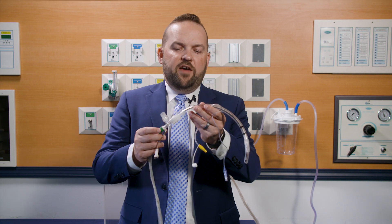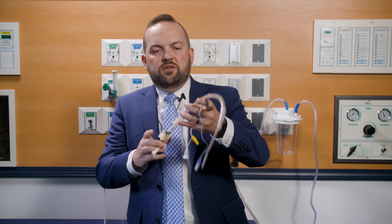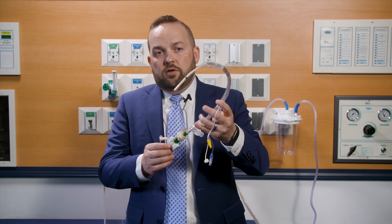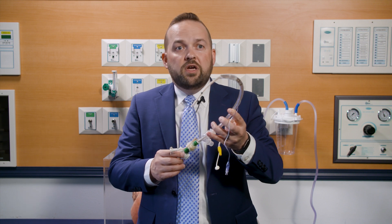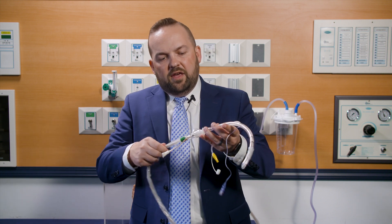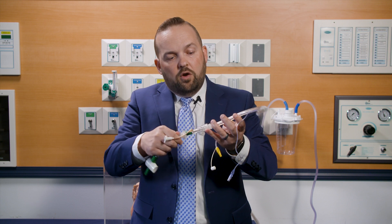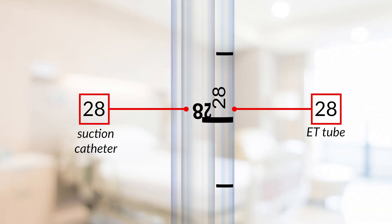Here I have a standard 7.5 millimeter endotracheal tube and a 14 French suction catheter. If you bury the catheter all the way to the hub, you'll see several centimeters sticking out of the end of the tube — that's guaranteed to come into contact with tracheal tissue, possibly going into the right main stem. Rather than doing it that way, you should insert the catheter noting that there are centimeter markings on both the catheter and the endotracheal tube. When you match those up — here I've matched the 28 centimeter markings — you'll see the tip of the tube is just at the end of the catheter, ensuring you won't come into contact with tracheal tissue at all.